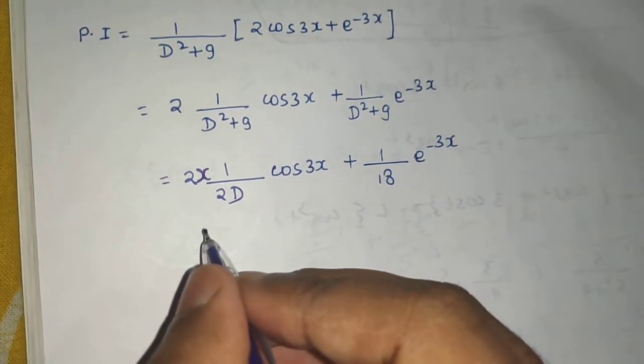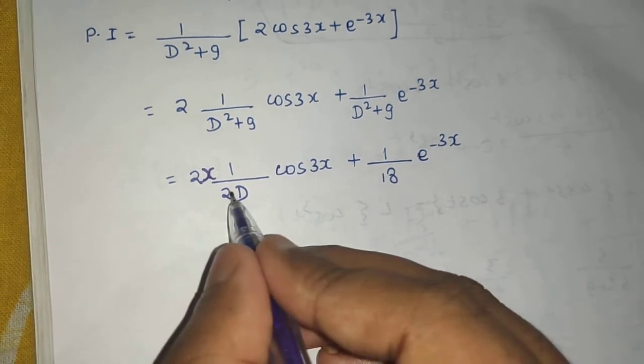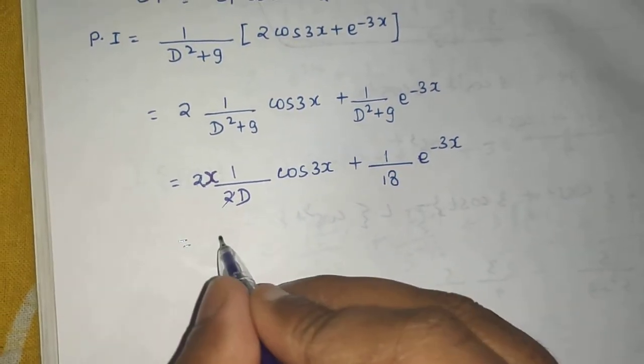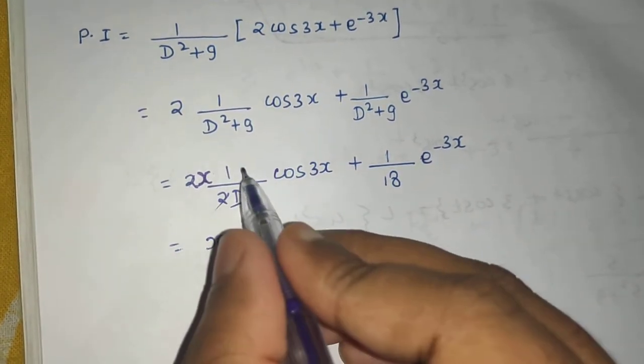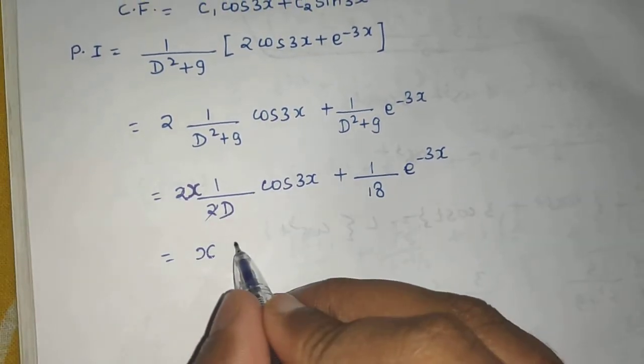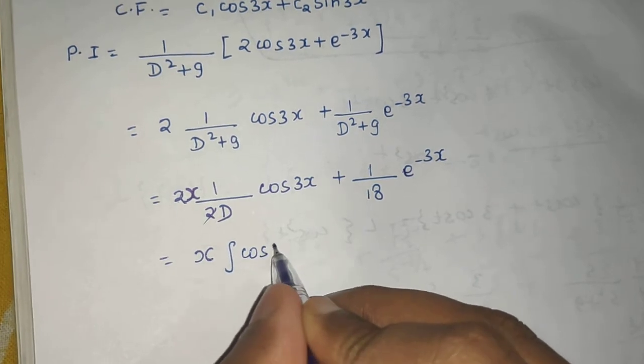Now 2 and 2 can get cancelled in this step. So you are left with x, and now 1 by D is same as integration. So I can write integral of cos 3x dx.